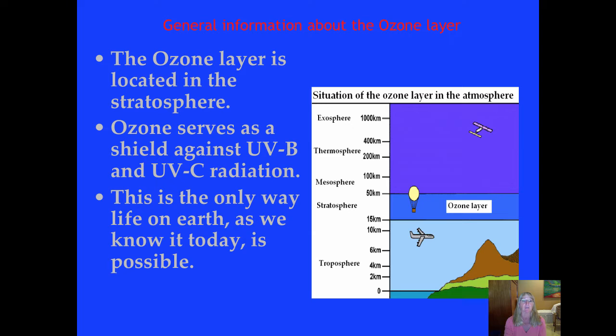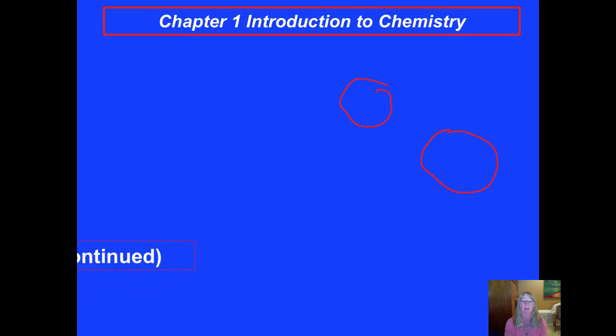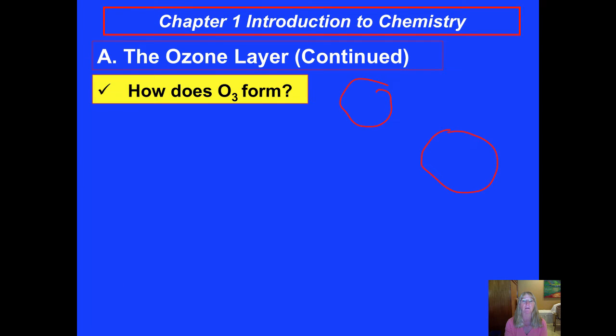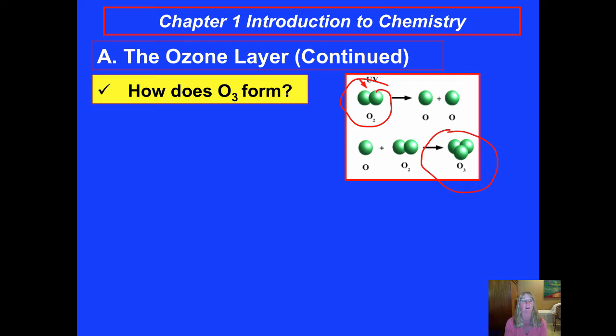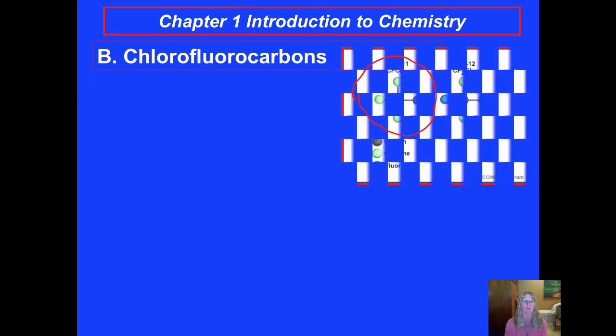It serves as a shield against both the B and the C types of ultraviolet radiation. If it did not, life as we know it on Earth would probably not exist. And how it forms is in a process shown in this diagram here. An O2 molecule can get zapped by ultraviolet radiation and break up into two oxygen atoms. And then a free oxygen atom can join an O2 molecule to make an O3, an ozone molecule.